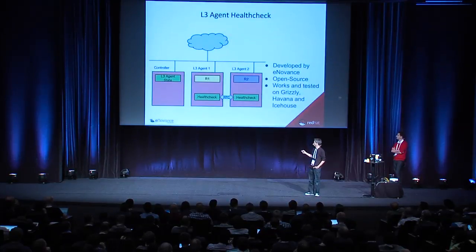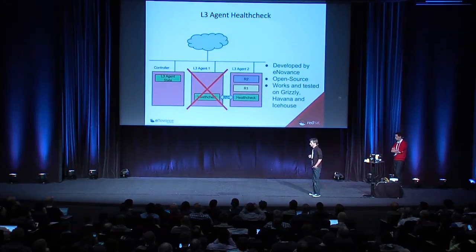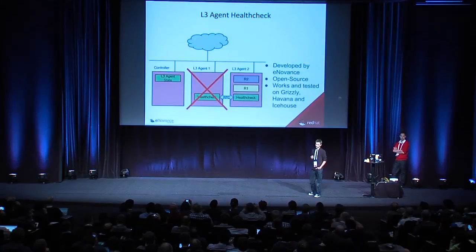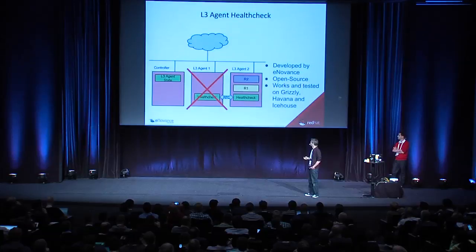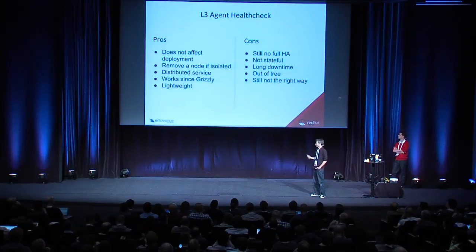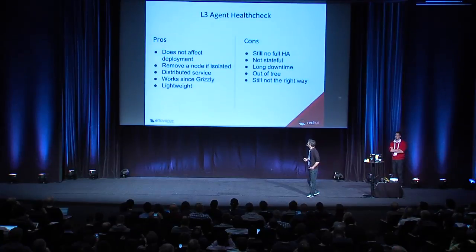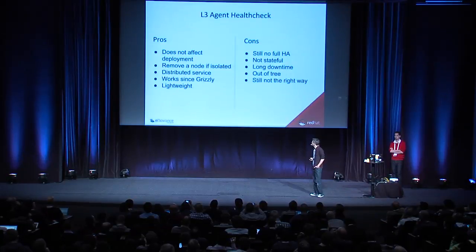Let's see what happens when there is a failure. When there is a failure, one of the health-check agents will take care of it and ask the controller to reschedule the virtual routers hosted on the failing agent to the remaining agents. In this case, virtual router R1 moves from agent 1 to agent 2. There are some pros and cons to using this kind of tool.